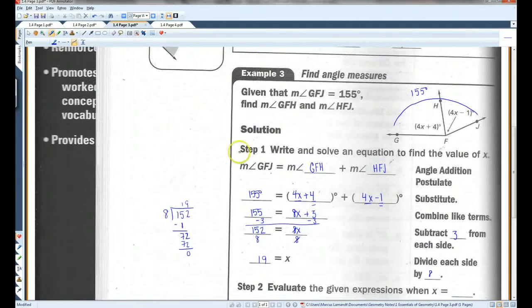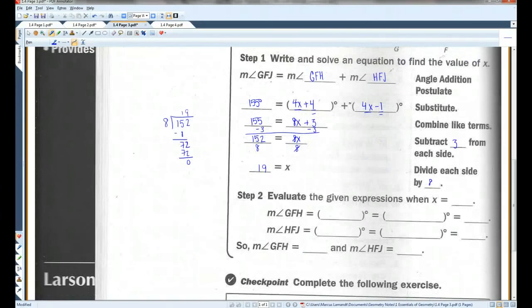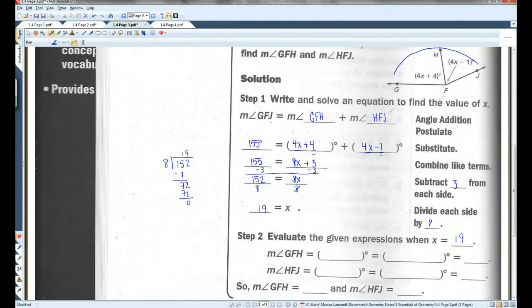So we solved for X, but that's not what the question is asking for. They want us to solve for the actual angles. So we've got to plug it in. We know that X equals 19. GFH is 4X plus 4. That's what it says here. So I can plug in 19. 4 times 19 plus 4. 19 times 4 is 76. 76 plus 4 is 80. So this is 80 degrees. HFJ is 4X minus 1. 4 times 19 is 76. Minus 1 is 75. So the measure of angle GFH is 80 degrees. And the measure of angle HFJ is 75 degrees.